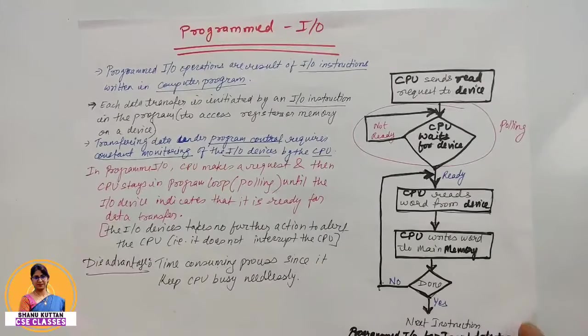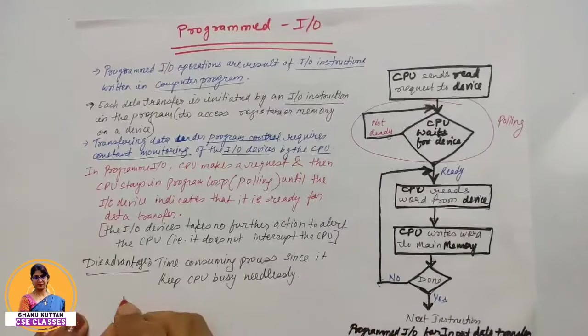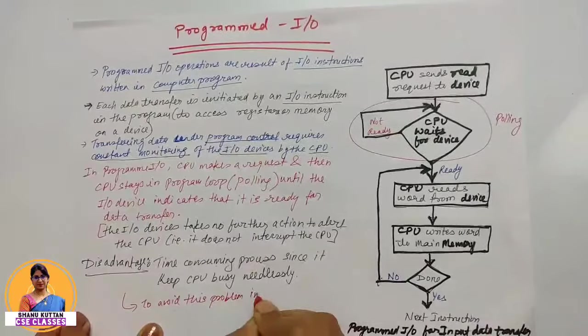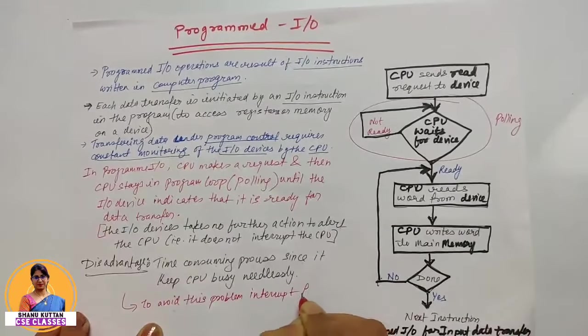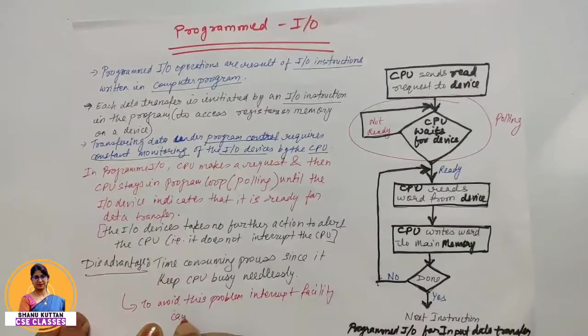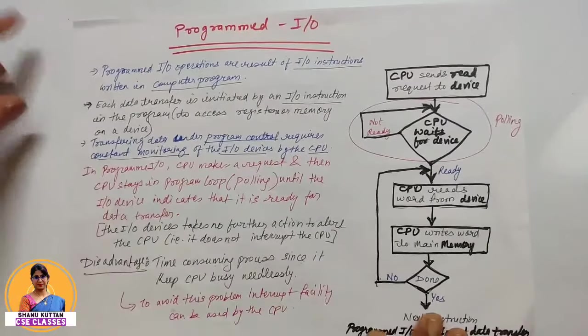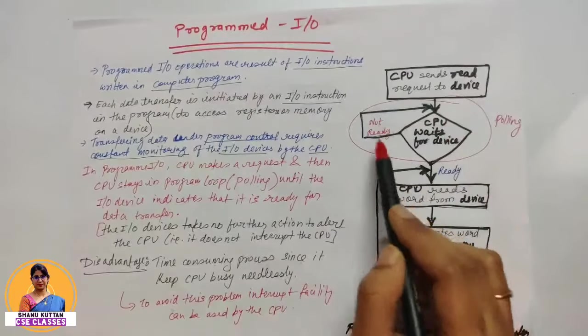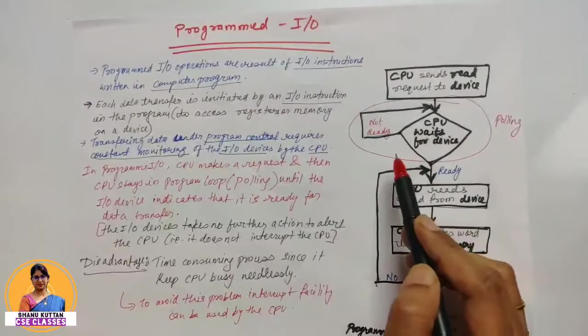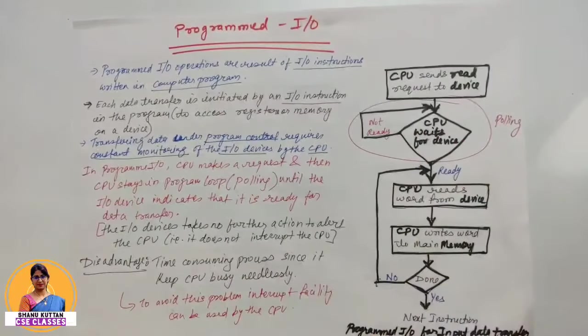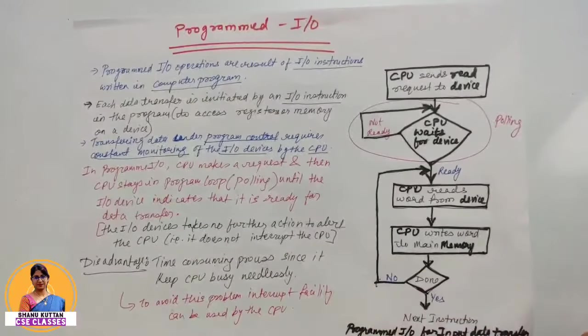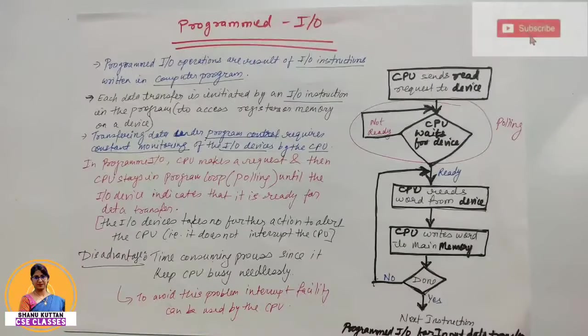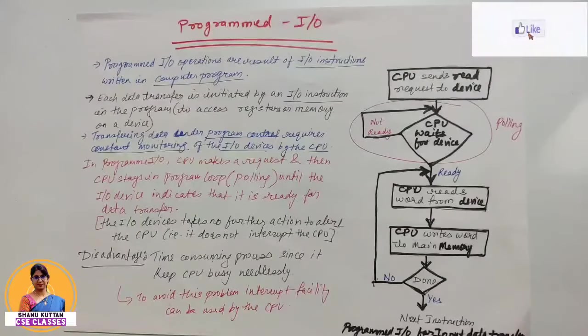Aur isay avoid karne liye use kiya jata hai interrupt facility. So to avoid this problem interrupt facility can be used. So now isi tarike se hum polling ko bhi define kar sakte hai. When CPU continuously checks the device to see if it is ready, then this method is called polling and it's totally a waste of time. That's why iski bajay hum interrupt initiated I/O ko prefer karte hai. So thank you so much for watching this video and do like, share, comment and subscribe this channel.